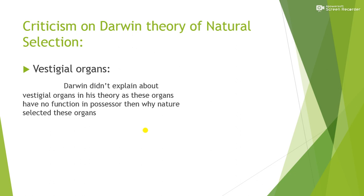So the criticisms so far: first, Darwin had no experimental proof. Second, he talked about variations but didn't explain where they are coming from. Third, he talked about the fittest individual but didn't explain how the fittest individual is produced. Fourth, Darwin says nature selects the fittest character — one that helps the organism survive in a particular environment — but vestigial organs have no function in their possessor, so why did nature select them and why have they not been eliminated from populations?